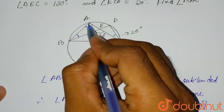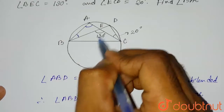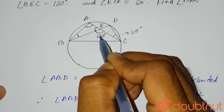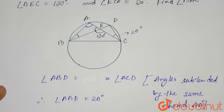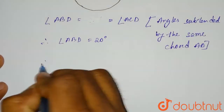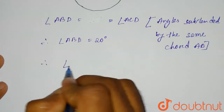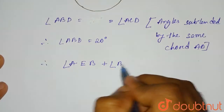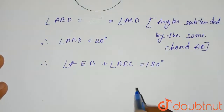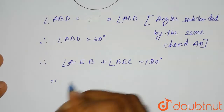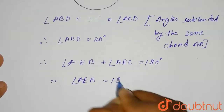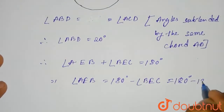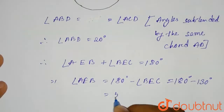Secondly, if we find angle AEB, it will be equals to 180 degrees minus 130 degrees, since angle AEB and angle BEC are supplementary and together make 180 degrees. So angle AEB equals 180 minus 130, which equals 50 degrees.